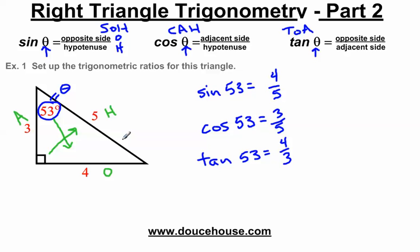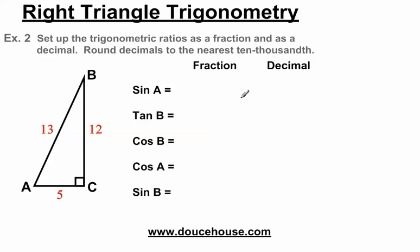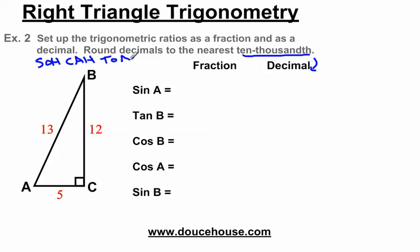I'm not going to plug anything into a calculator right now. So we have another example problem that's going to go a little bit more in depth and be a little bit more challenging. It says: set up the trigonometric ratios as a fraction and as a decimal, round decimals to the nearest ten-thousandth. Let's start setting up the trigonometric ratios. Notice this is sine of angle A and tangent of angle B, so I'm going to be going back and forth between these angles A and B. I'll write down SOHCAHTOA to help me remember the ratios.